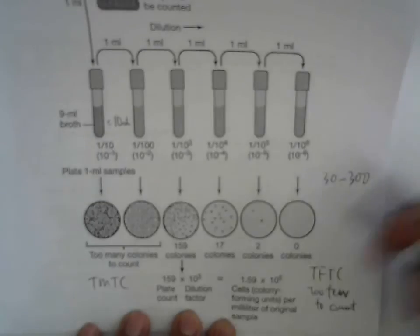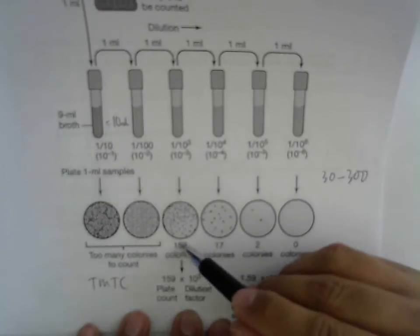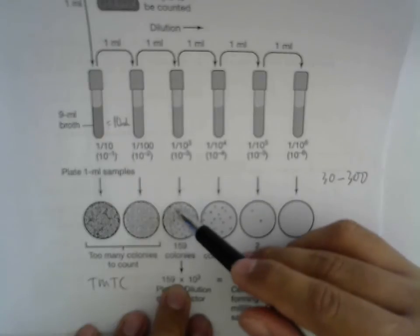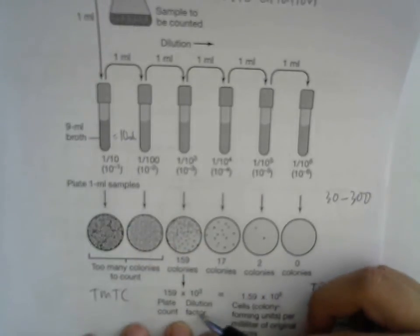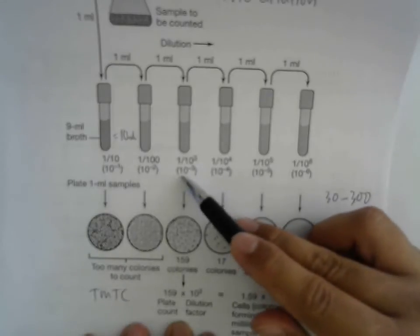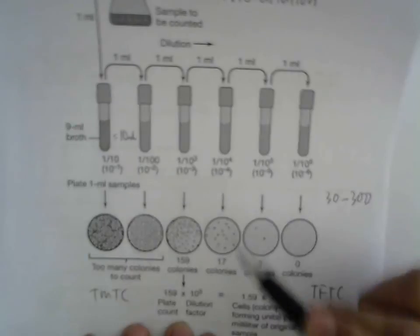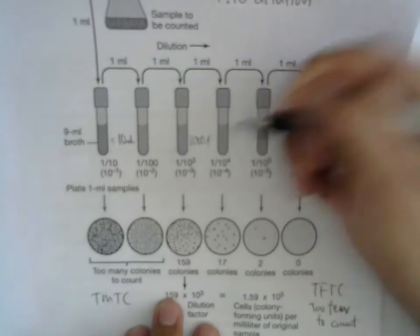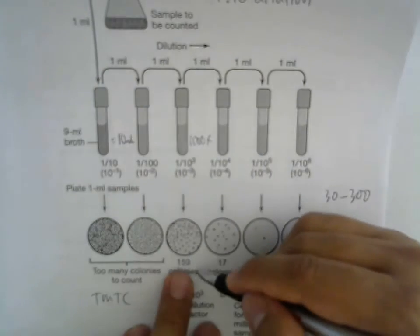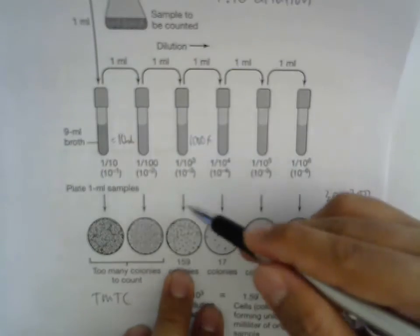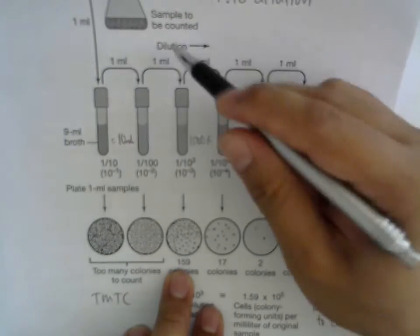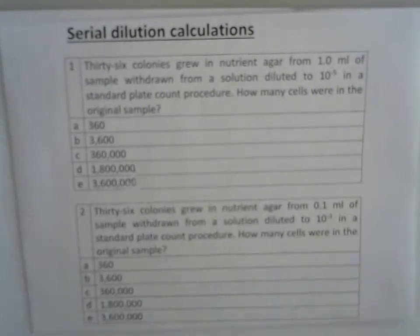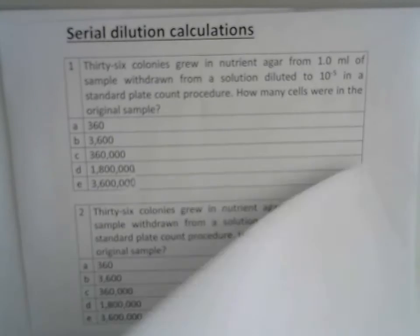So for example, 72 would be too few to count, while 159 is just right — 159 cells. To get the original concentration, you multiply by the dilution factor. If it has been diluted one thousand times, you times back by one thousand to get the concentrated original value. This is your serial dilution calculations as given in your tutorial.